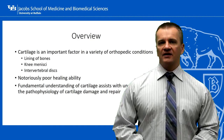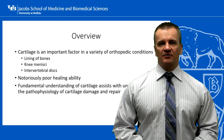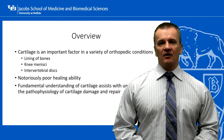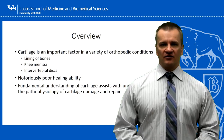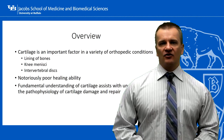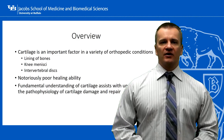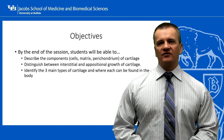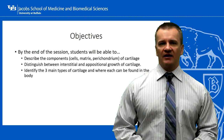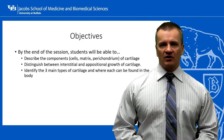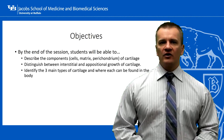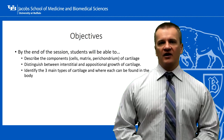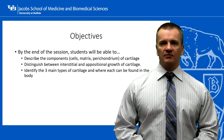Before we can get into any of these specific details about the pathology of cartilage damage, we need to cover the basics, which is the purpose of the present session. In this session, we'll look at the fundamental components that define cartilage tissue and look at the specific characteristics of hyaline, elastic, and fibrocartilage. We're also going to look at cartilage development and growth, which will also help with our understanding of bone growth in a later segment.